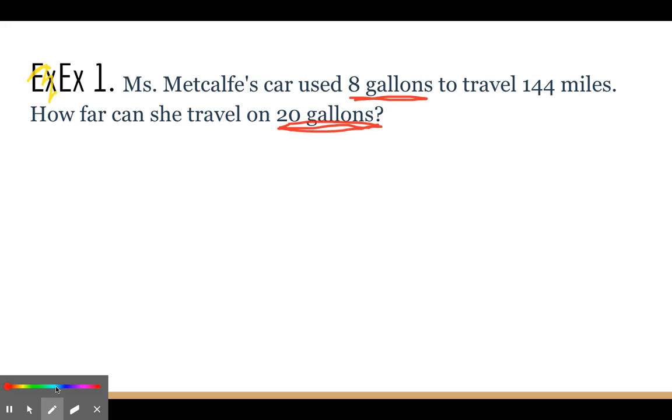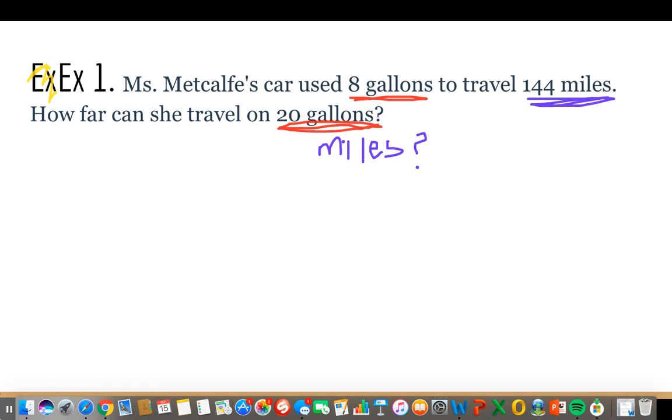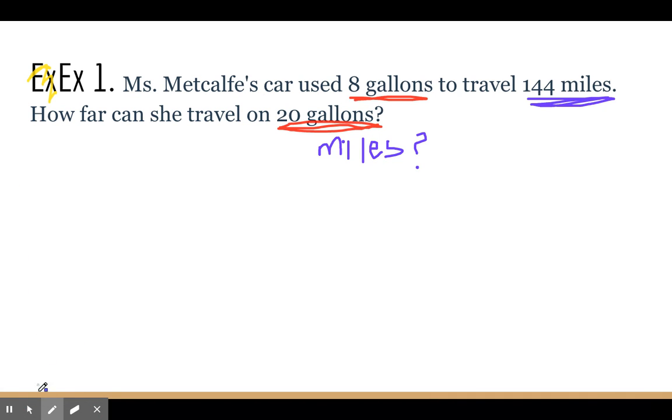And then it talks about miles, so this is the new one: 144 miles my car travels on 8 gallons. Then it wants to know how far can I travel on 20 gallons, so how many miles on 20 gallons. And we don't know that yet. So first we need to set up our proportion.